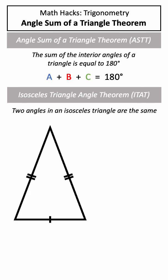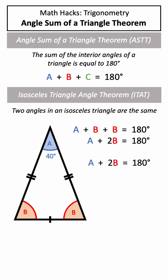In an isosceles triangle, two of the angles will be the same, so again we can simplify our theorem, giving us only two variables. If the unique angle was equal to 40 degrees, we could substitute this into our equation and solve for both the remaining angles being equal to 70 degrees.